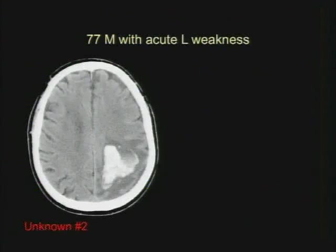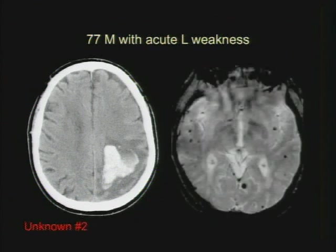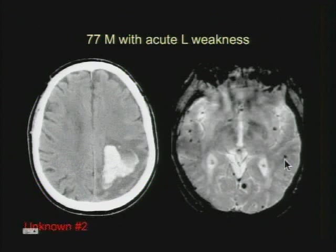The second unknown case is a 77-year-old with acute left-sided weakness. There's an intraparenchymal lobar hematoma in a 77-year-old — one of the top things you should be thinking of is amyloid angiopathy. And that's exactly what you see here: multiple areas of susceptibility on the gradient sequence. A big differential is hypertensive hemorrhage.